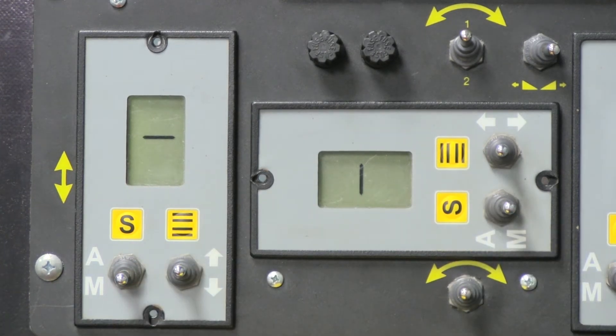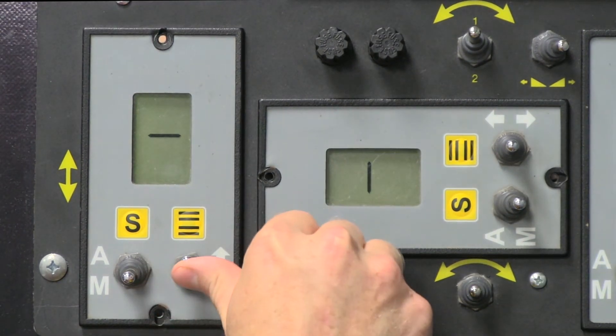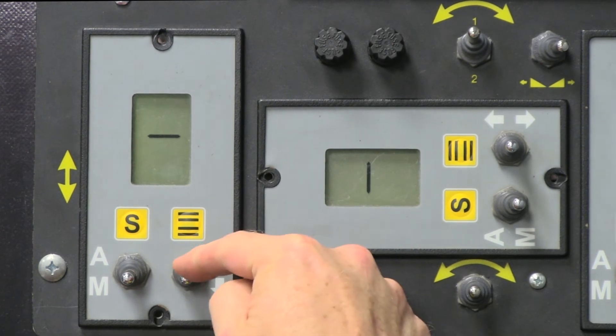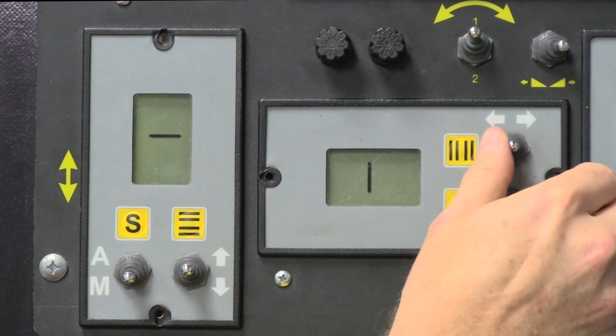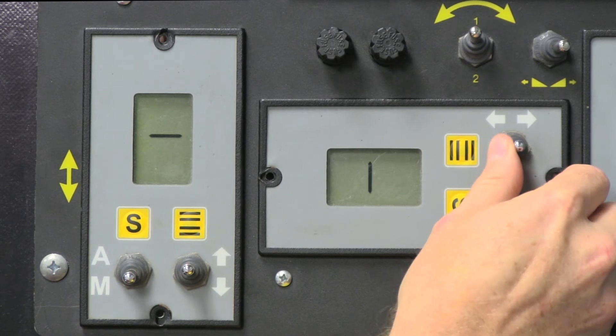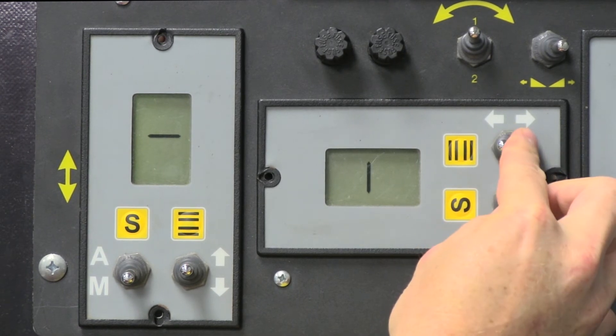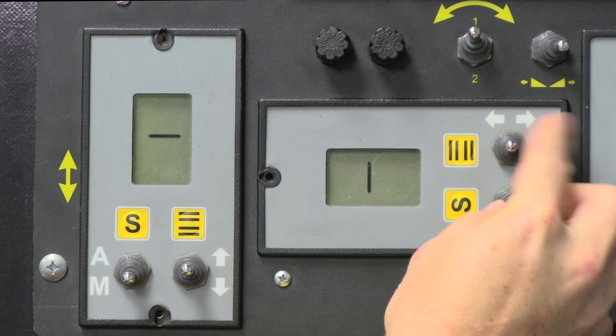We will start with the jog switch. This toggle switch activates the function, regardless of whether the function is in auto or manual. It will move the function up or down for elevations, and left or right for steering.